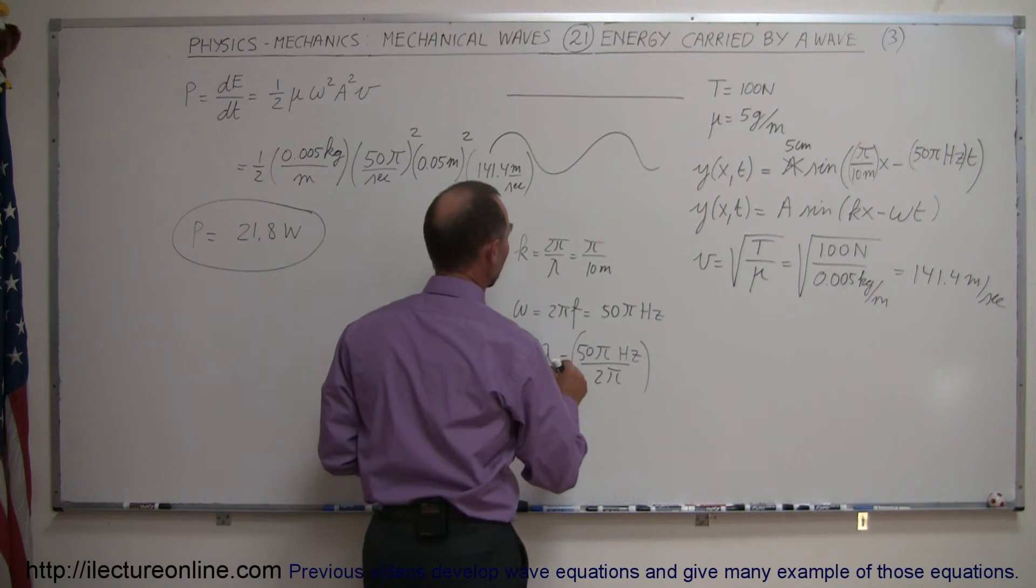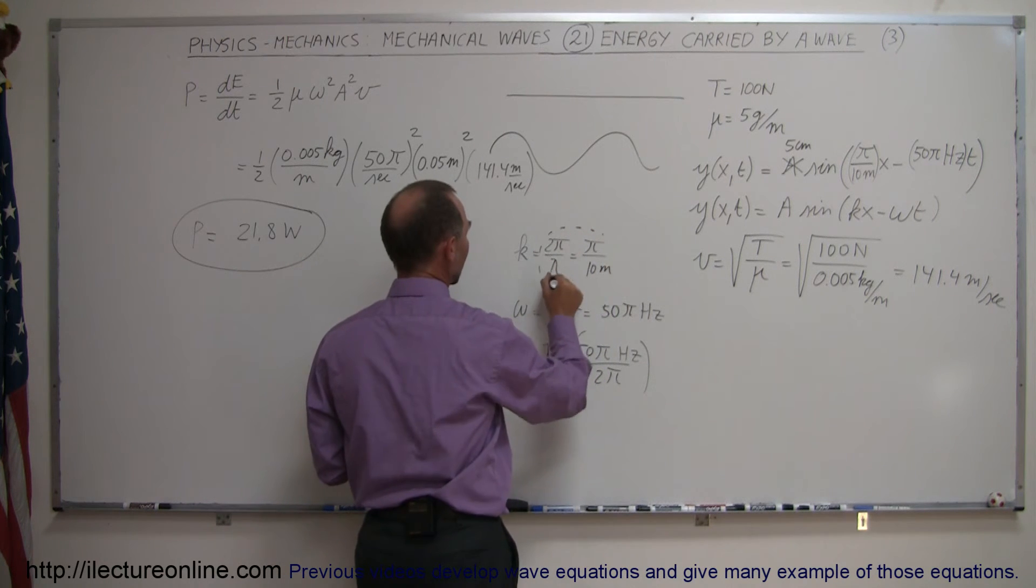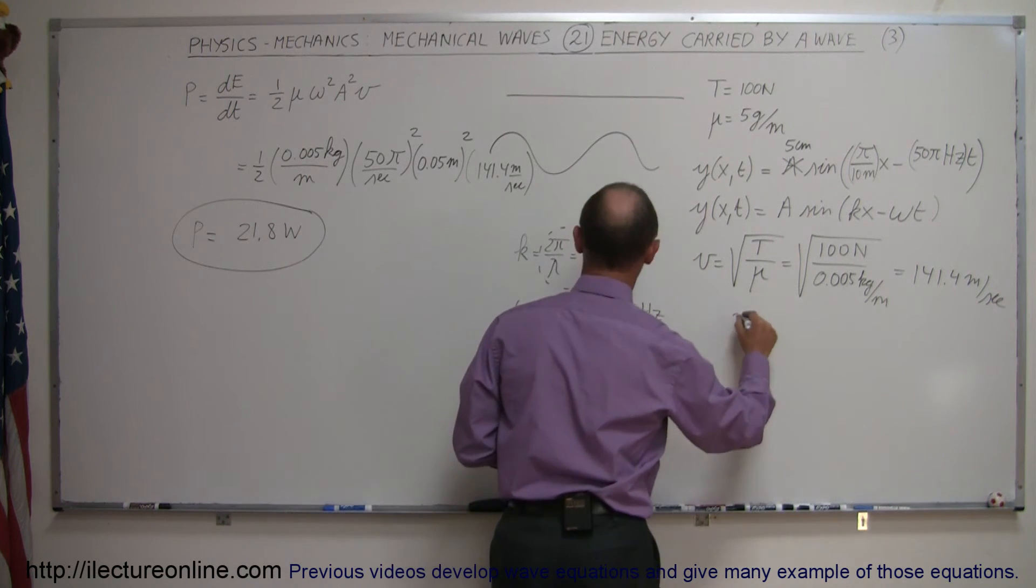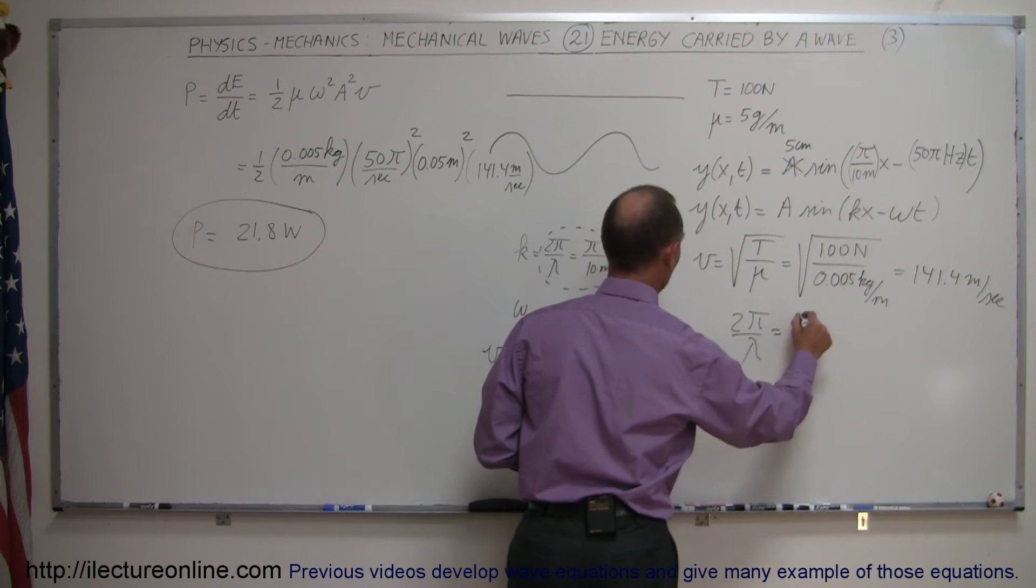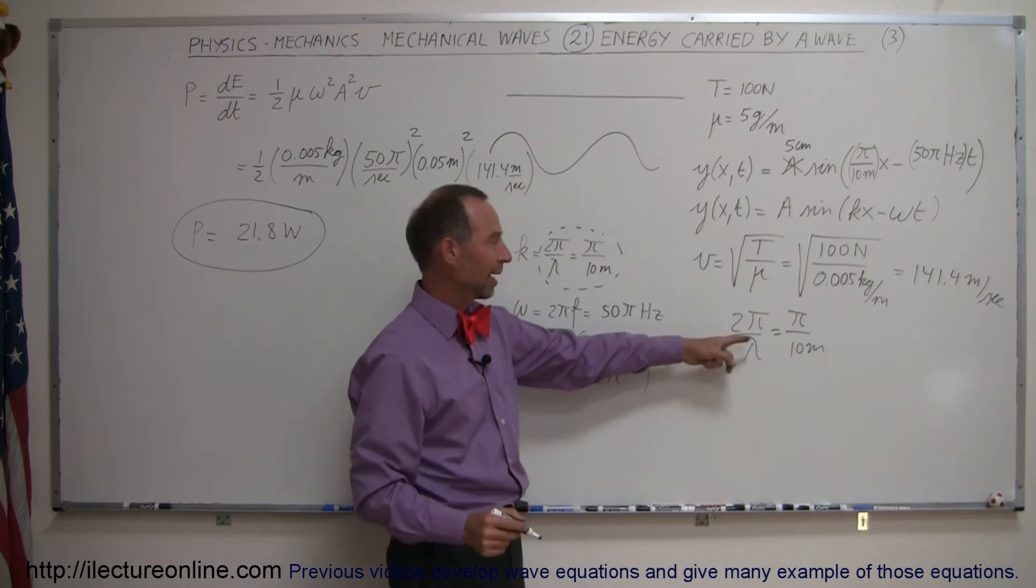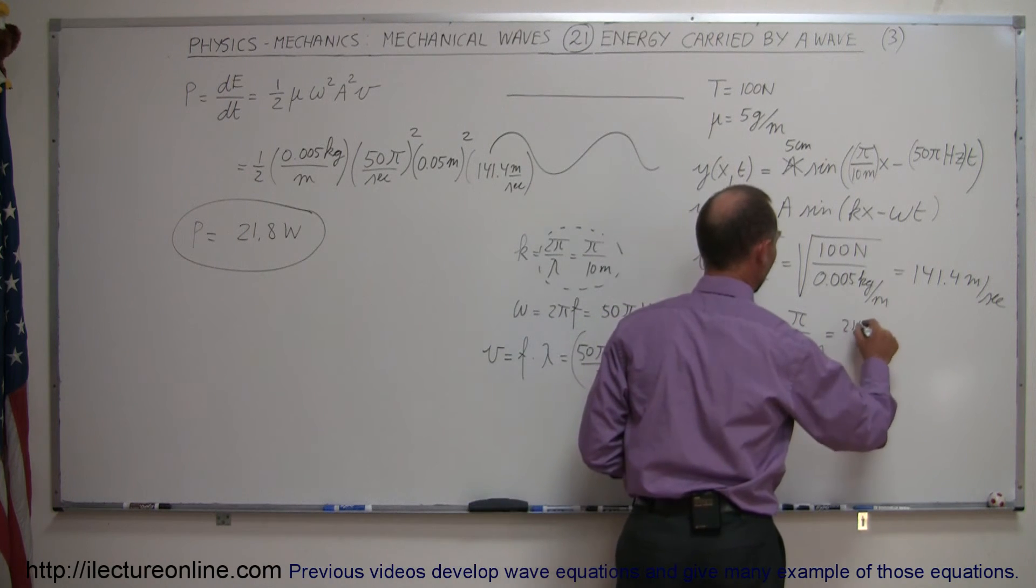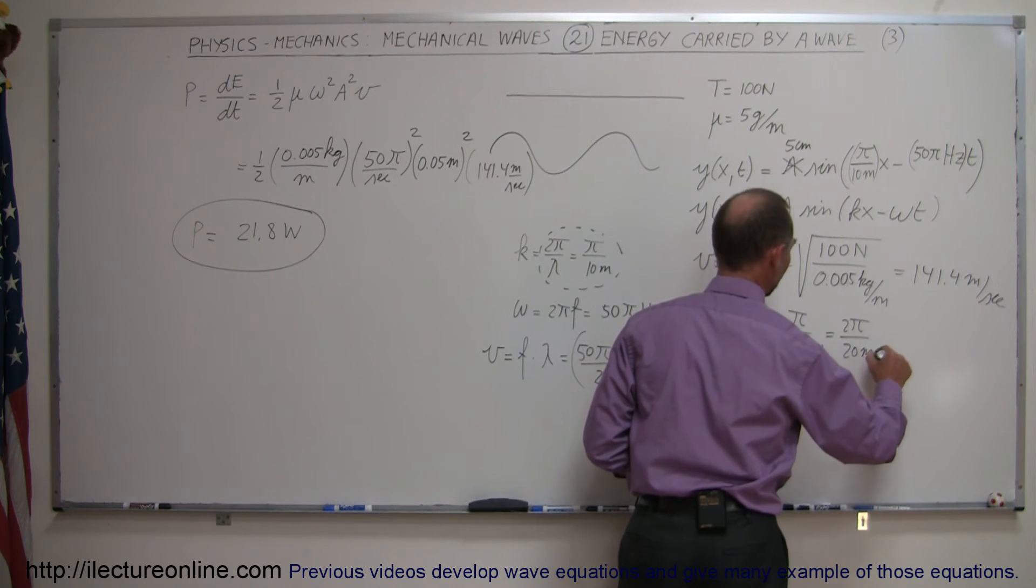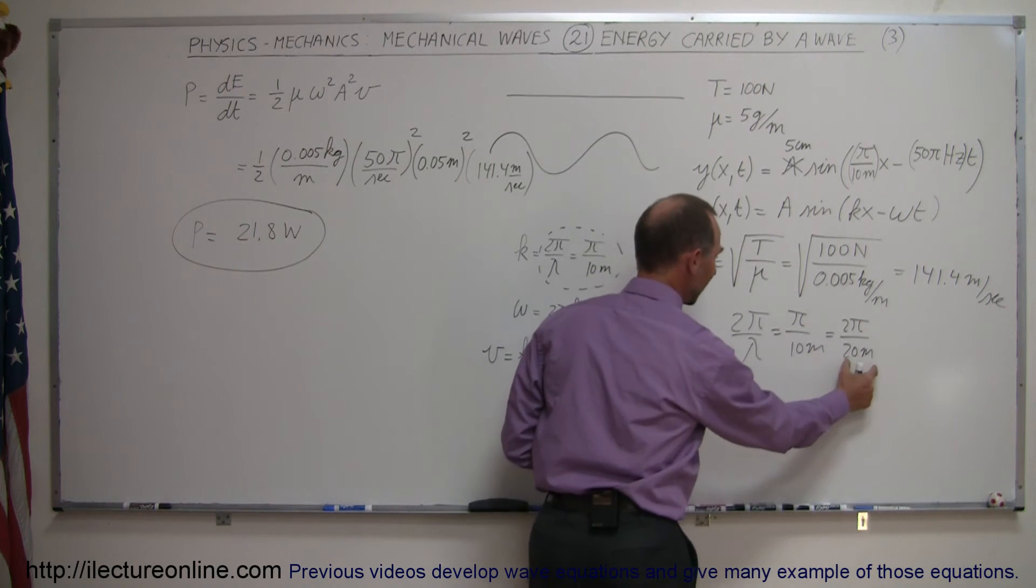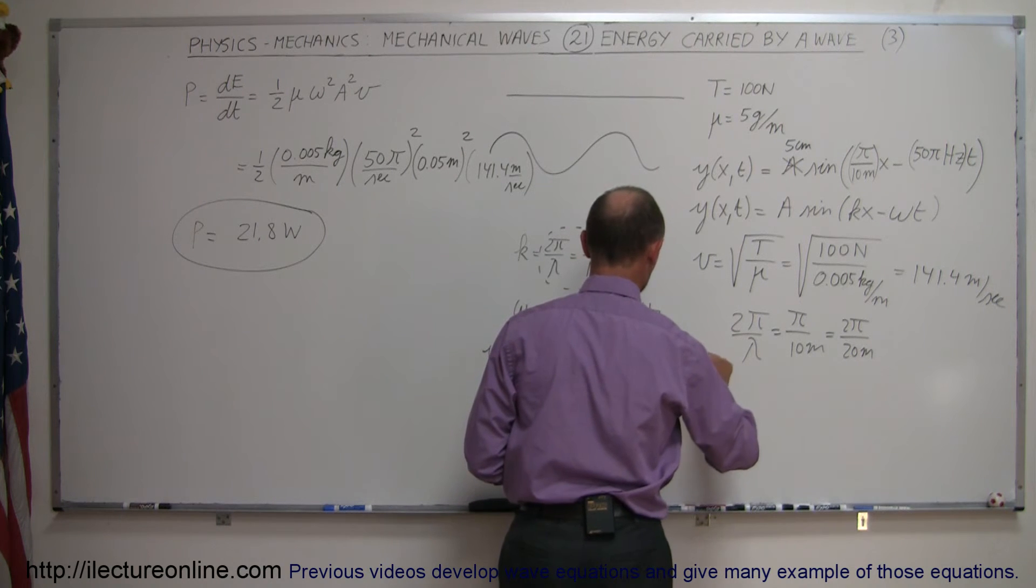And now lambda can be obtained by taking this, so, hmm, let's see here. So, I'm going to take this value right here, and I'm going to write this as 2 pi over lambda equals pi over 10 meters. So, if I multiply the top and the bottom here by 2, I can say, well, that's equal to 2 pi over 20 meters, and I can clearly see that my lambda is 20 meters, so that multiply times 20 meters.